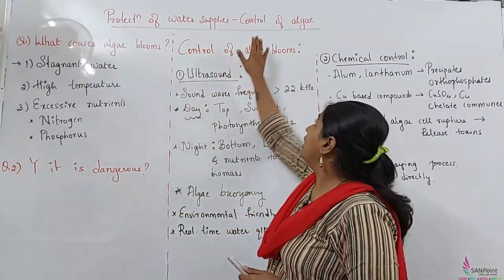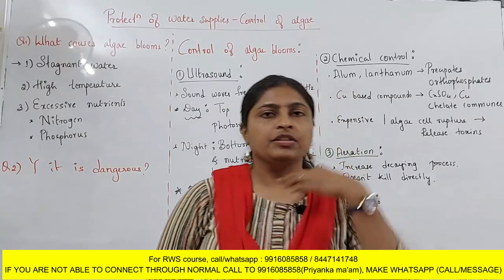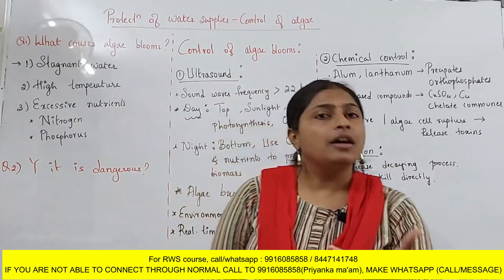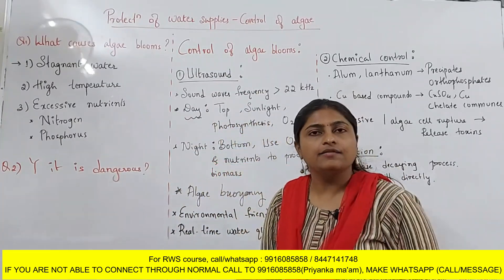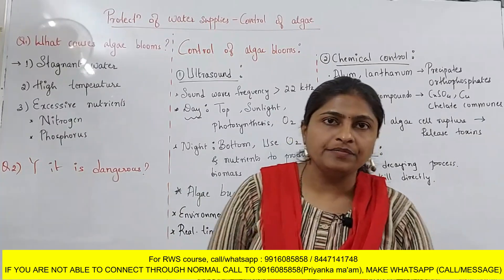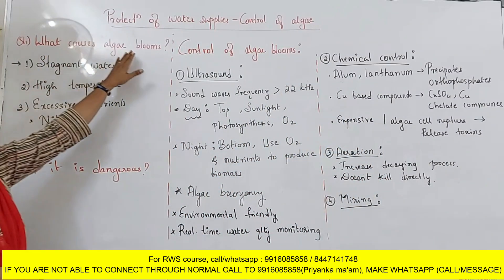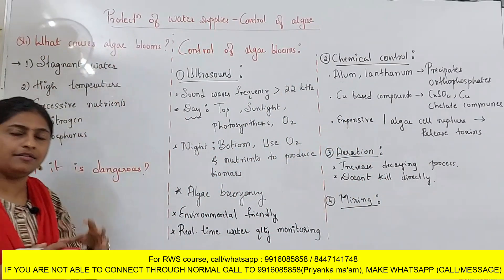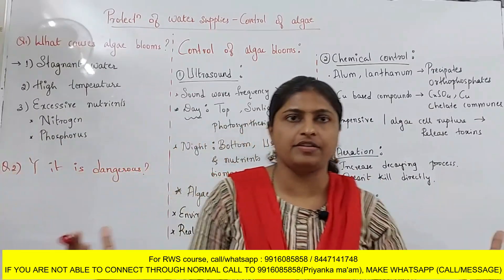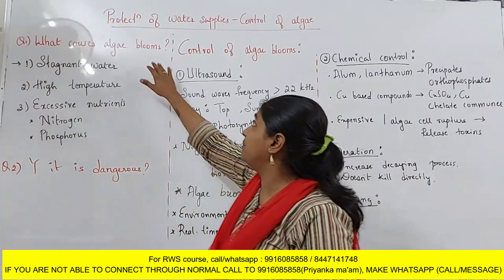I have explained a lot about algae earlier. So what is algae? It is a green colour plant which grows in water. Now, why does this algae grow? When the algae starts increasing on the water surface, that is called an algae bloom.